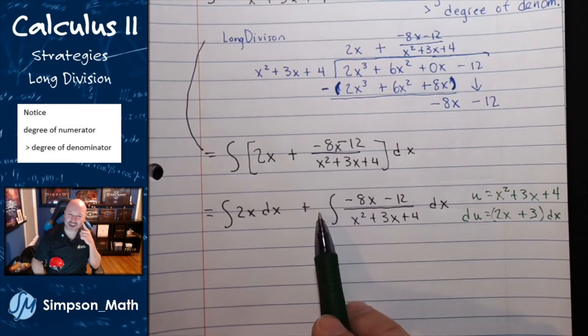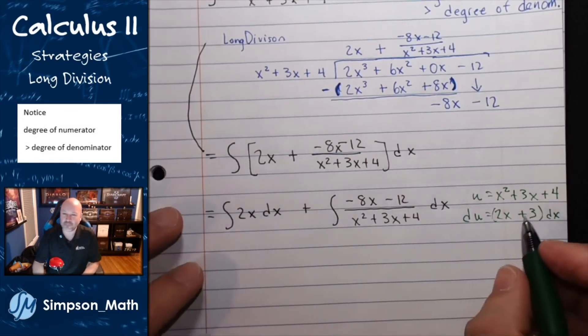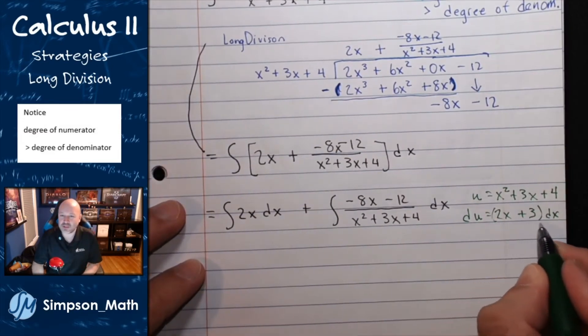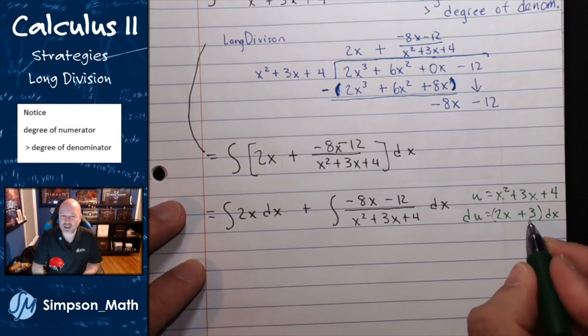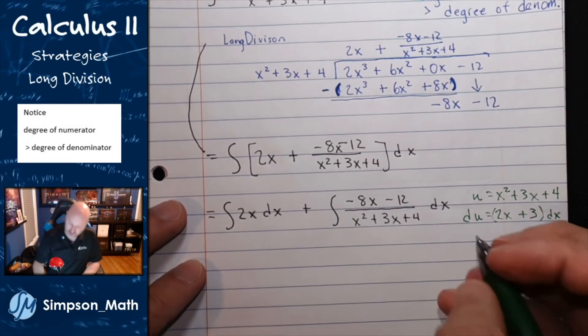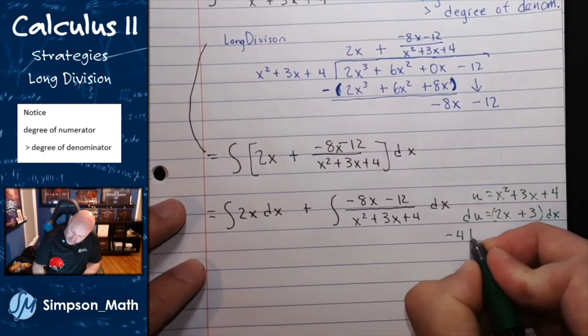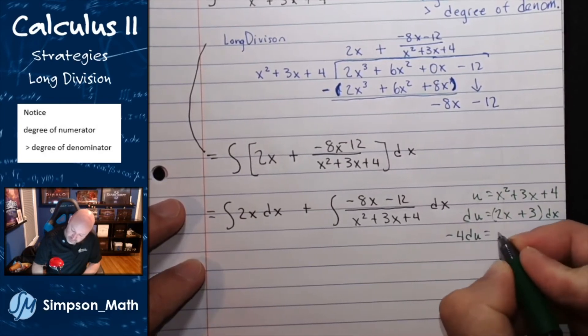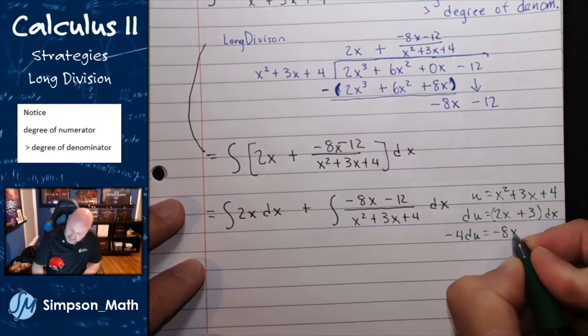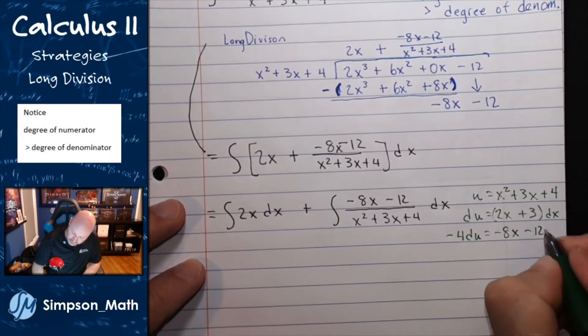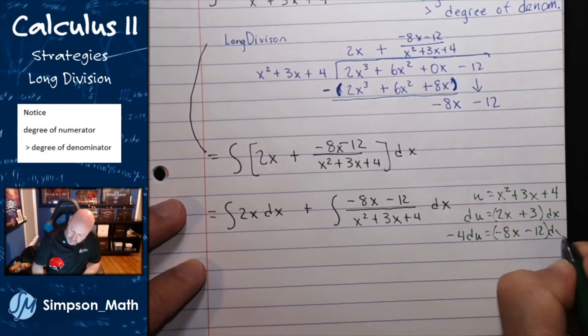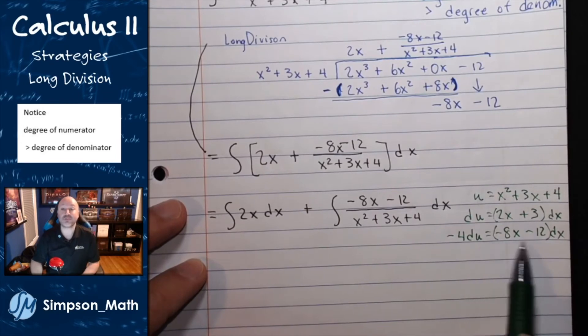I could have factored that out. But, I think what I'll do here is I will just multiply everything in this equation by negative 4. That should work out. Negative 4 du would be equal to negative 8x minus 12. And, that will allow me to do the u substitution.